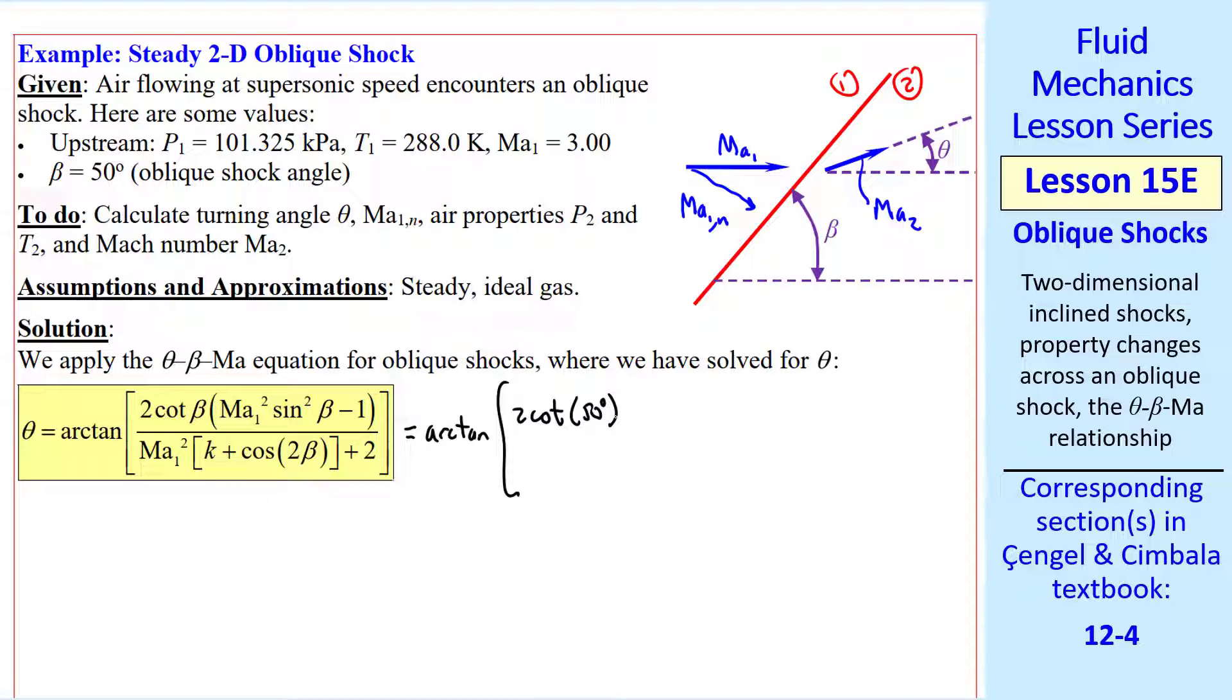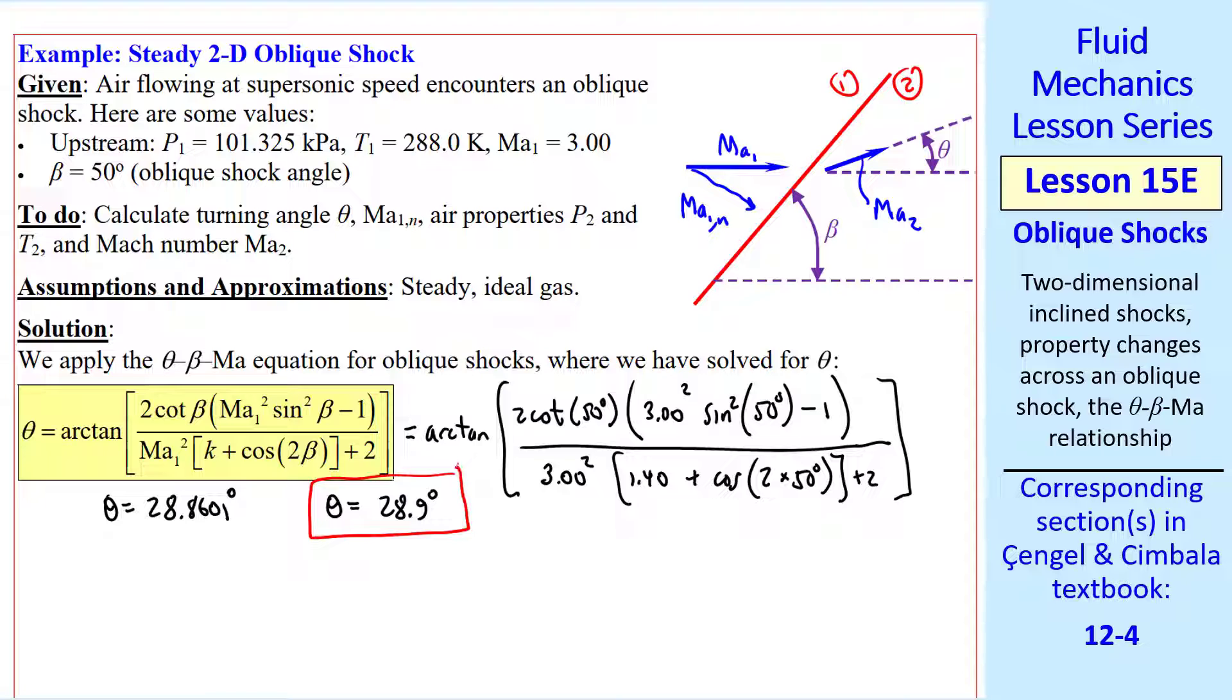I plug in the numbers, 2 times cotangent of 50 degrees, MA1 squared, sine squared beta, minus 1, over Mach number squared, K, plus cosine 2 times beta, plus 2. I get this answer, and I keep all these digits for later use. But I give all my answers to three significant digits. Theta is 28.9 degrees. This is the turning angle. The air turns by that amount.